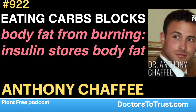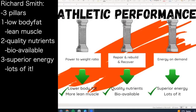These are my three pillars for athletic performance. To gain that athletic performance, we're looking at a good power-to-weight ratio — we need to be powerful but as light as possible. Regardless of what discipline we compete in, we need low body fat and more lean muscle mass, the ability to repair, rebuild, and recover, which requires quality bioavailable nutrients, and finally lots of energy — energy on demand, superior energy.